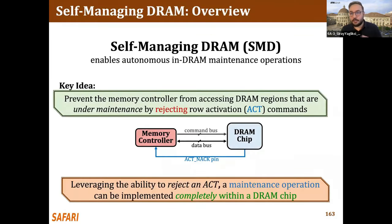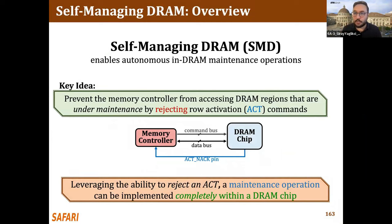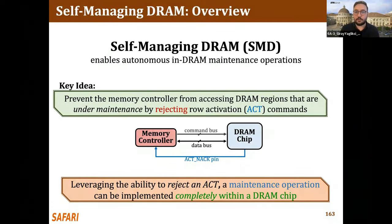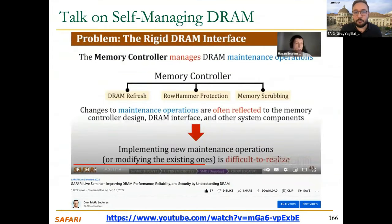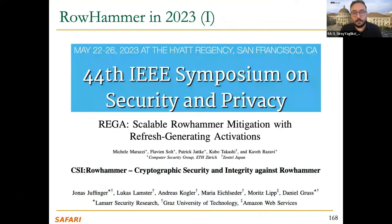There is also a paper about self-managing DRAM. The problem is that implementing new reliability or security countermeasures requires modifying the whole system, and current JEDEC standards make this difficult. This paper proposes modifying DRAM so that maintenance operations — including DRAM refresh, rowhammer protection, and memory scrubbing — can be easily implemented within the DRAM itself. There is a full talk available about this, and more upcoming papers in 2023 about rowhammer countermeasures.